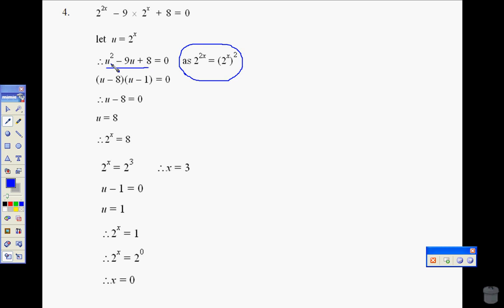So now if I look at this nice quadratic equation, factorize to give me u minus 8, u minus 1. So again, I've just used the cross method there. u minus 8 would equal 0, u is equal to 8, 2 to the power of x is equal to 8.